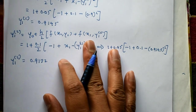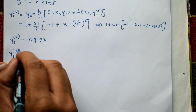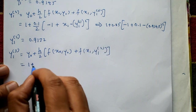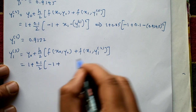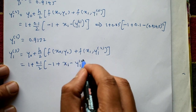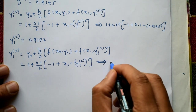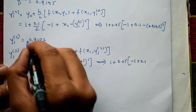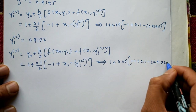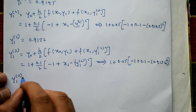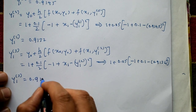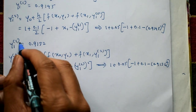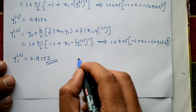Next approximation: y1³ = y₀ + (h/2)·[f(x₀, y₀) + f(x₁, y1²)] = 1 + 0.05·[-1 + (0.1 - 0.9132²)]. Using a calculator, y1³ = 0.9133. Comparing y1³ and y1², only the last digit changed, so the iteration has converged and we accept this as the final answer.